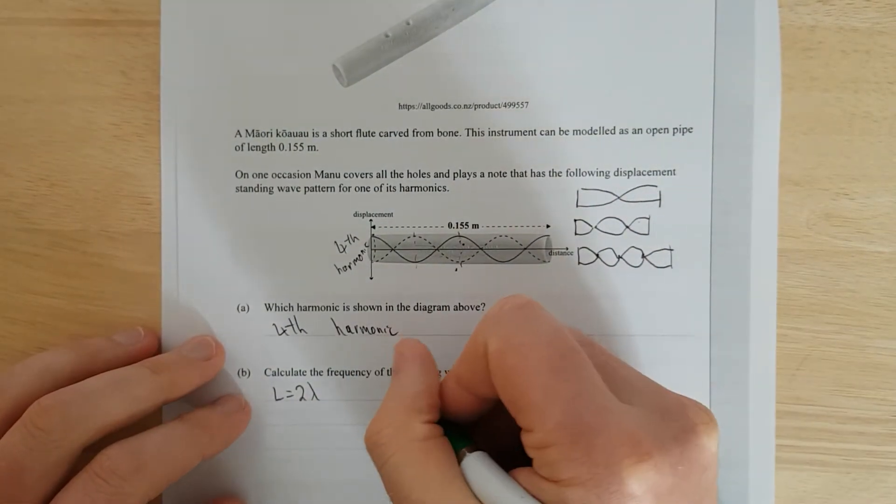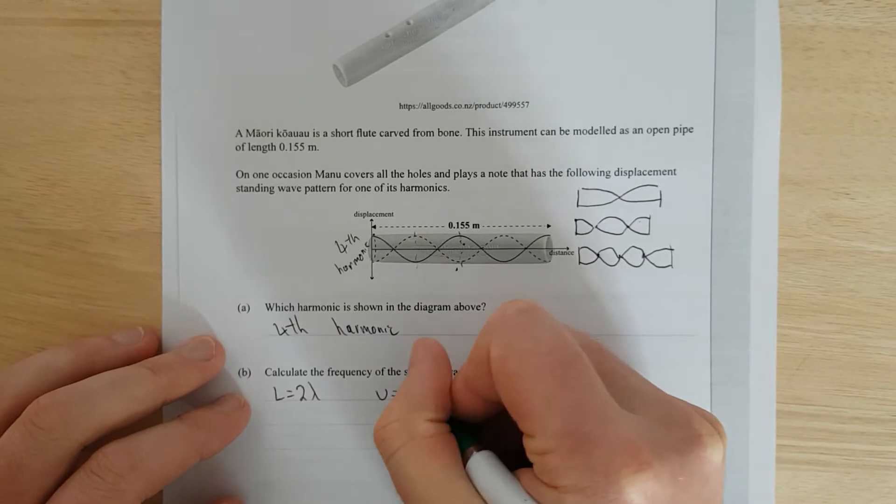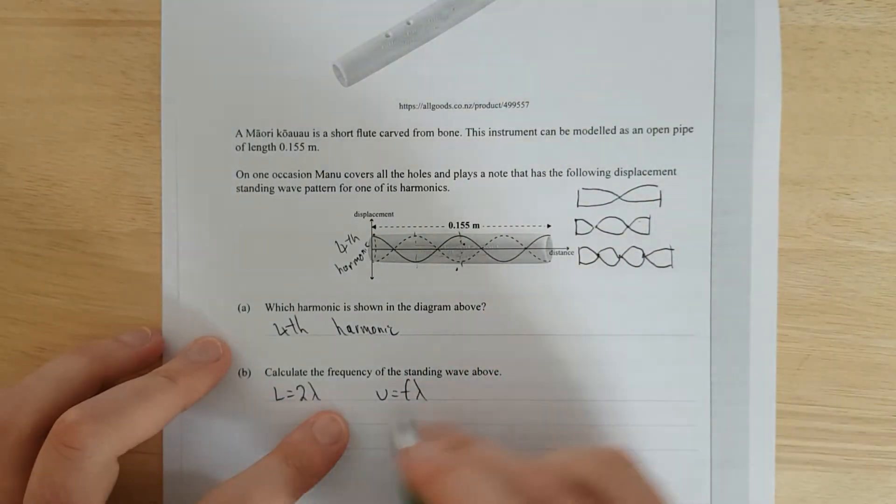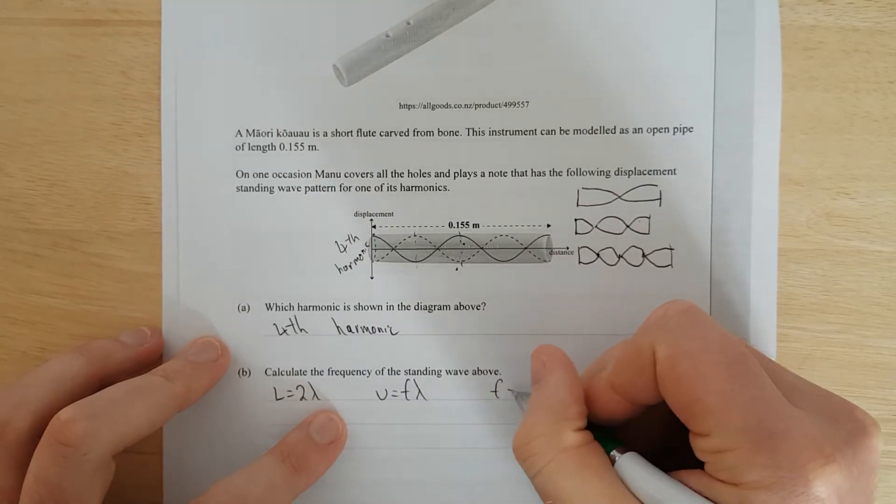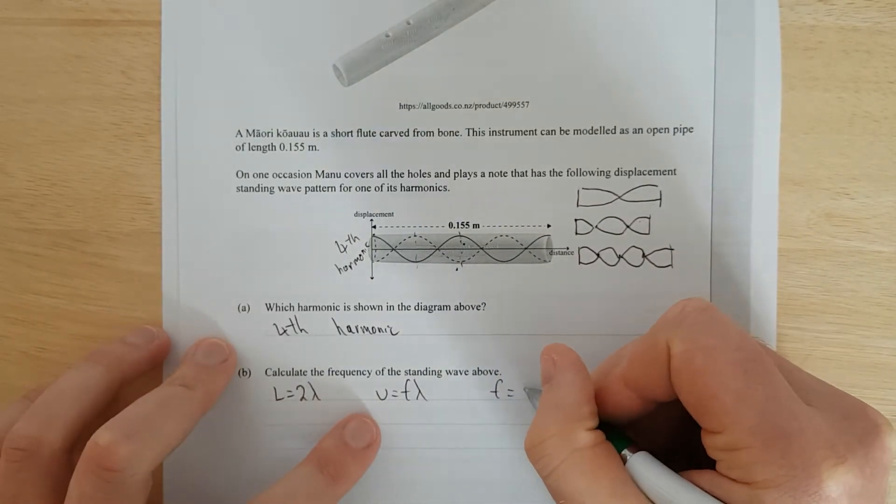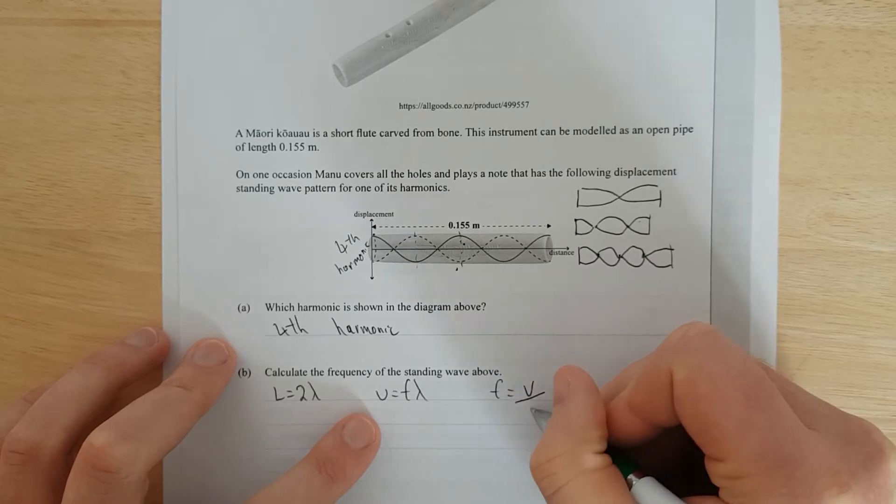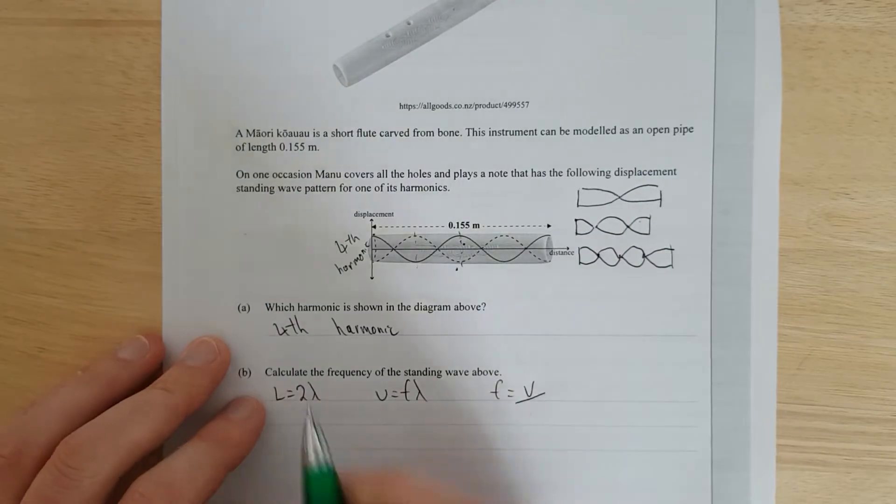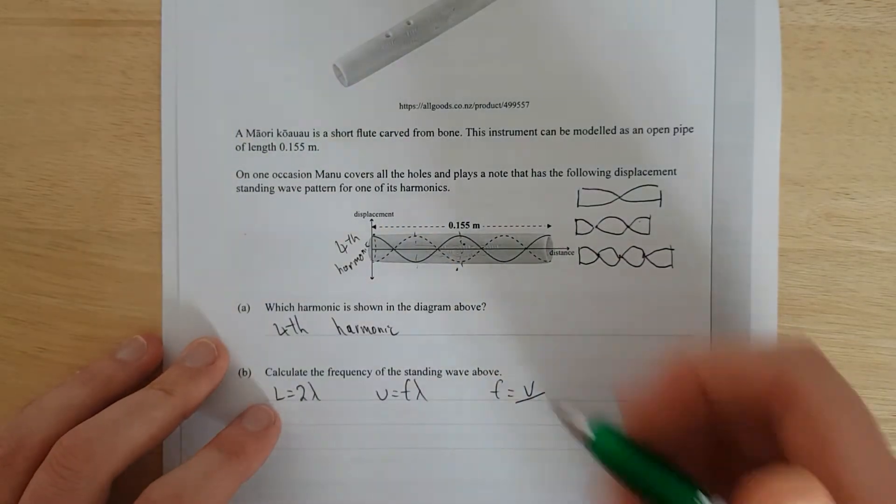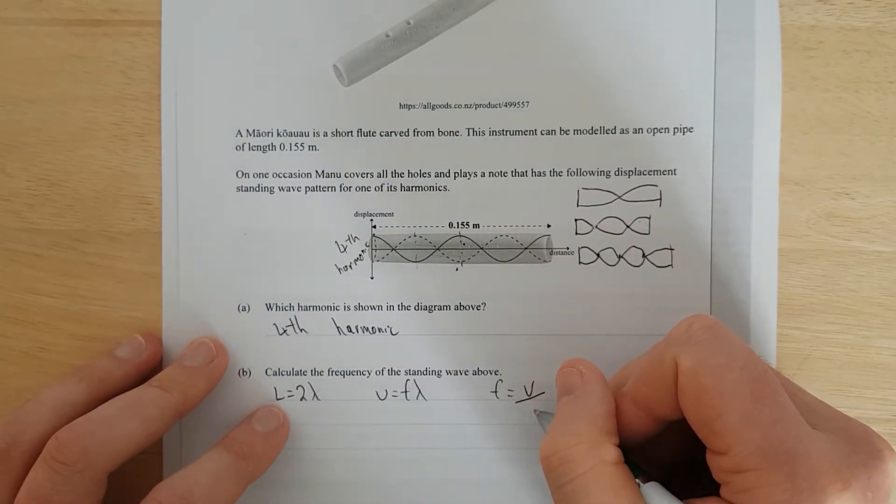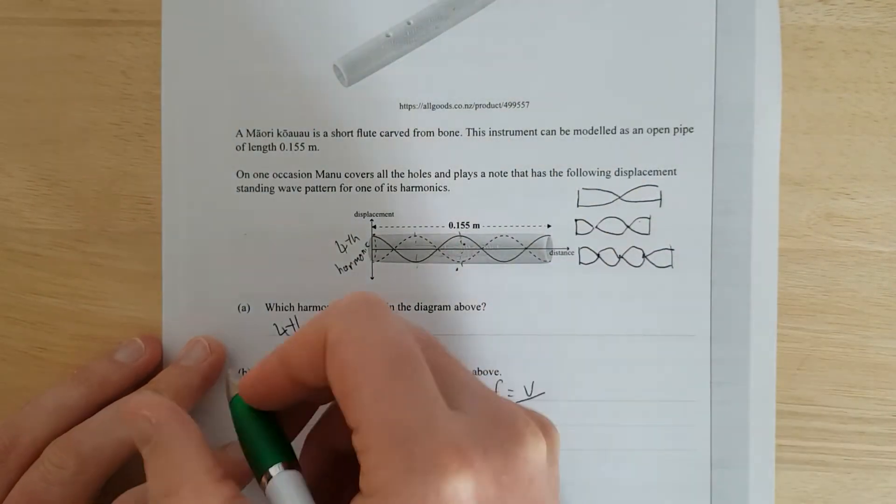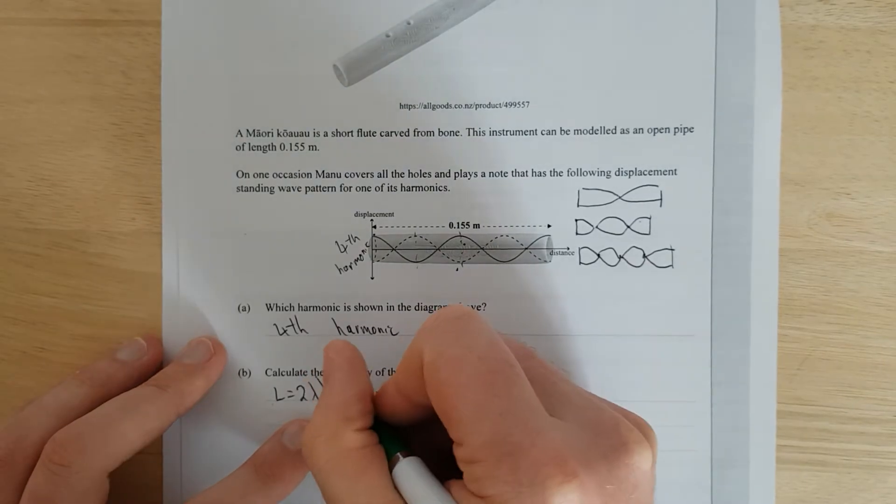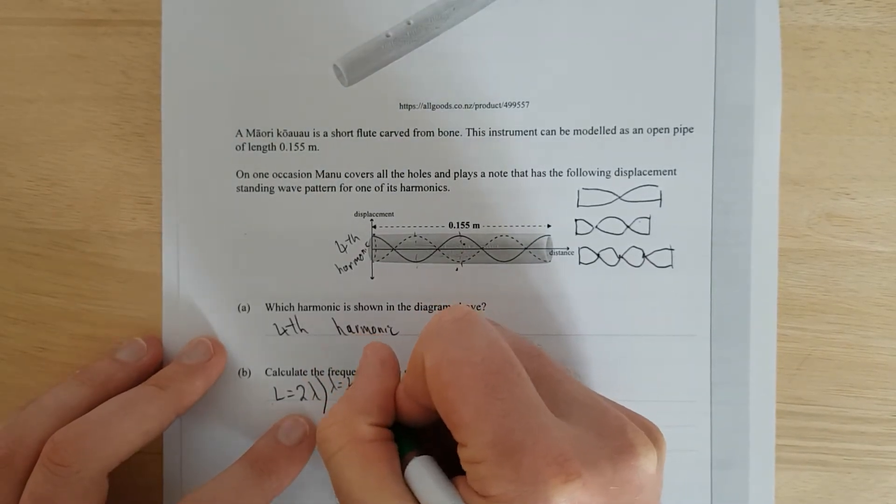And we know that the frequency, well, V equals F lambda, so the velocity is equal to frequency times the wavelength. In other words, the frequency would be equal to the velocity divided by the wavelength. But in this case, I would put wavelength here, but I know that the wavelength, if I just move this two underneath. Well, I'm going to rearrange first.